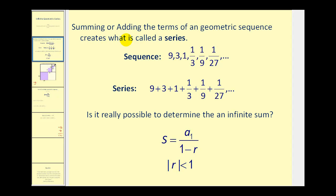As we mentioned before, summing or adding the terms of a geometric sequence creates what is called a geometric series. Here is a geometric sequence and here is a geometric series. Notice that both of these go on forever, therefore they are an infinite geometric sequence and an infinite geometric series.